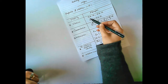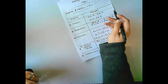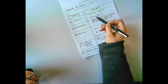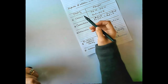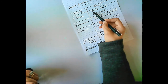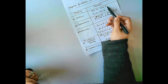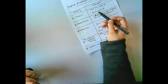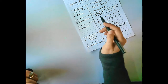Closure means: 3 belongs to Z and 2 belongs to Z, then 3 plus 2 equals 5, which also belongs to Z.